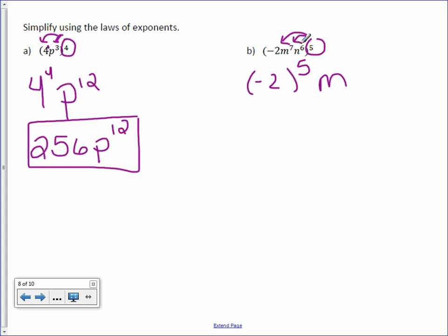M, distribute, multiply those exponents. And distribute by multiplying the exponents. When you put negative 2 to the 5th in the calculator, make sure it is in parentheses. So negative 2 to the 5th power is negative 32. And our variables, we just carry down.